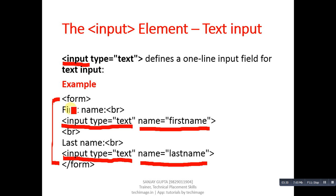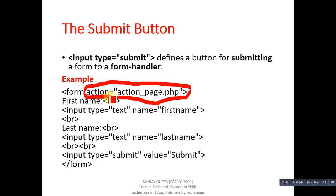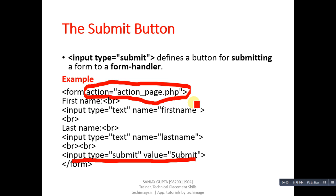If you want to connect your HTML script with any server-side scripting language, then you have to use the action attribute in the form tag. It is mentioning action equals to action_page.php. At the end you can see input type submit is available, which will create a submit button. If you click on this submit button, then control will automatically transfer to this PHP script, which will be executed so that the input can be received and later stored inside the database. This is the way through which you can connect your HTML script with any server-side scripting language.